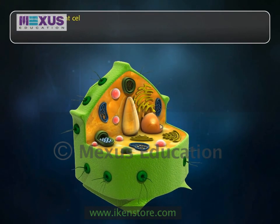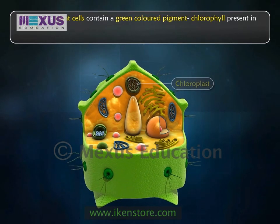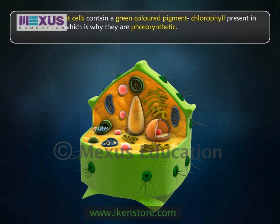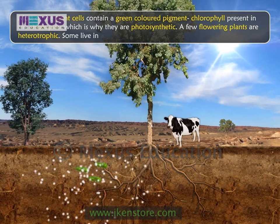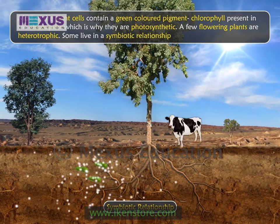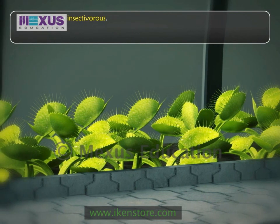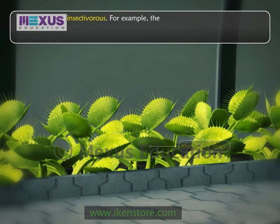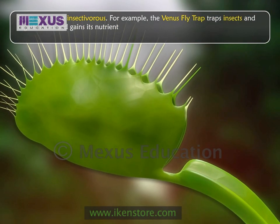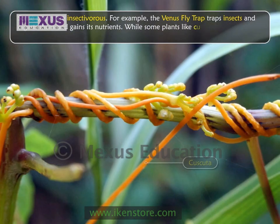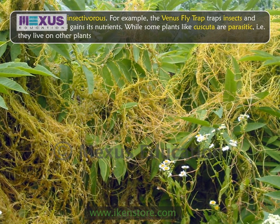Most of the plant cells contain a green colored pigment, chlorophyll, present in the chloroplast, which is why they are photosynthetic. A few flowering plants are heterotrophic. Some live in a symbiotic relationship with bacteria. Some plants are insectivorous — for example, the Venus fly trap traps insects, digests them, and gains its nutrients. While some plants like skewter are parasitic, that is, they live on other plants for their nutrients.